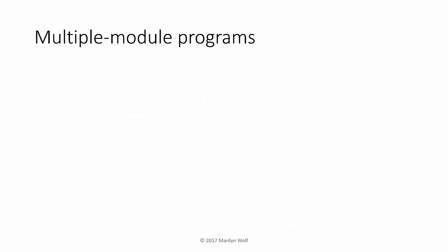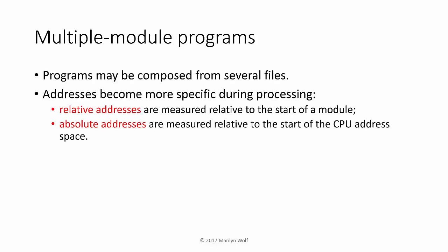We often want to assemble a program out of several different modules of code, so we need a way to turn generic addresses for memory locations into more and more specific addresses. A relative address is measured relative to the start of a code module — for instance, the first location might be zero. An absolute address is in the memory space itself, measured relative to the start of that memory space.